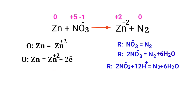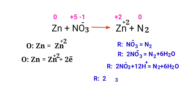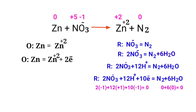Now balance the charges in the reduction half reaction. Both sides are not equal, so add 10 electrons to the left side to make it equal to 0. The addition of charges are now equaled in the reduction half reaction.